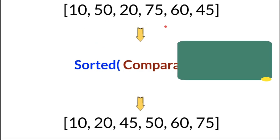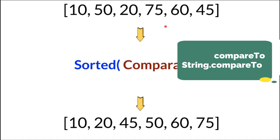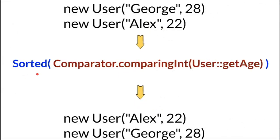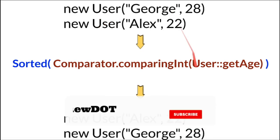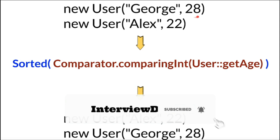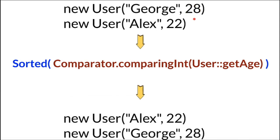The sorted method uses the compareTo method inside the object — for example, an Integer or String object. Finally, we get the result from the sorted method. We can also use a custom Comparator implementation; for example, for a User object we can give a hint to use the age field for comparison.